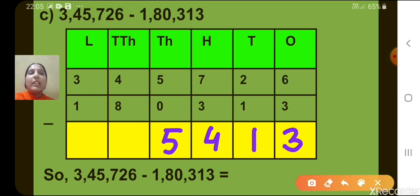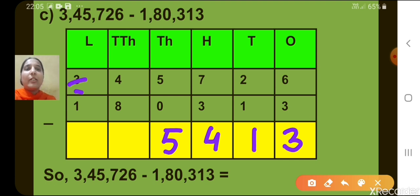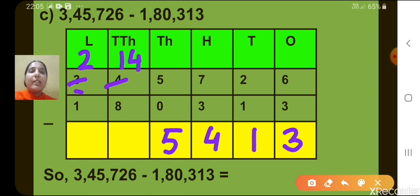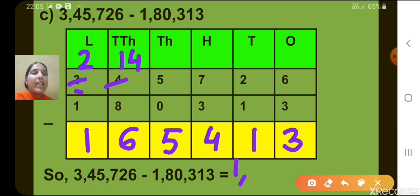Now let's move to the 10,000's column. 4 minus 8 is not possible, so we have to borrow from the lacs place. The digit at the lacs place is 3. When we borrow 1 from 3, 2 will be remaining, and at the 10,000's place we now have 14. So 14 minus 8, what will we get, children? 6. And 2 minus 1, we get 1. So what is the answer? It's 1,65,413.